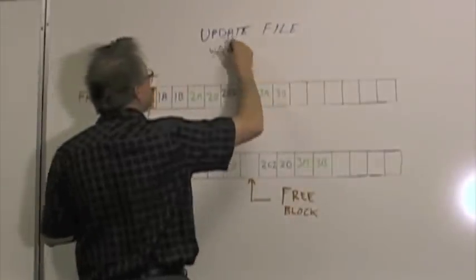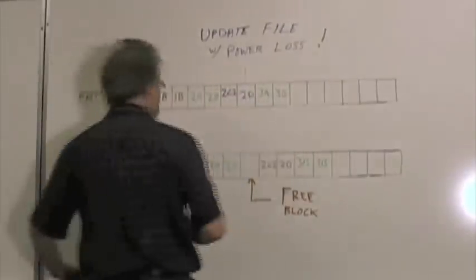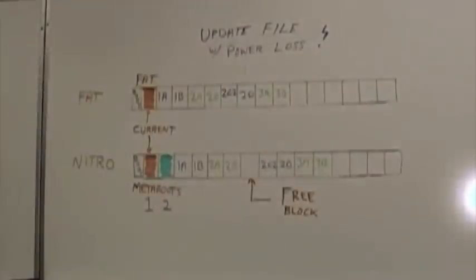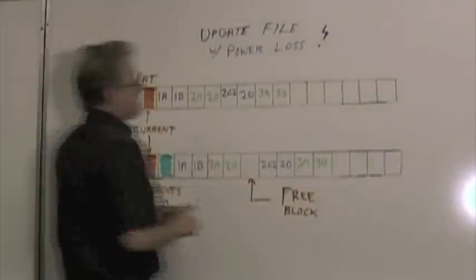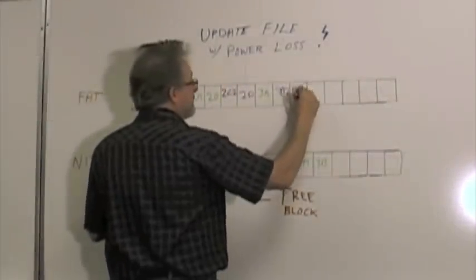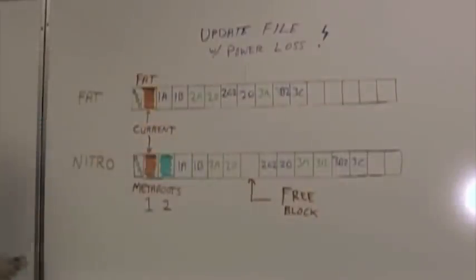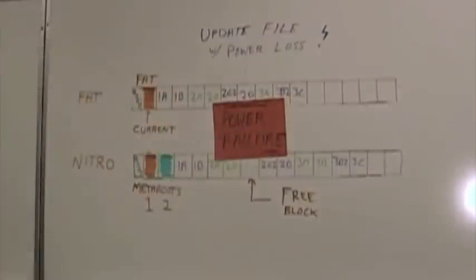This file update will be interrupted by a power failure. Some or all of the file data is written, but the system data write does not complete before the power is lost.